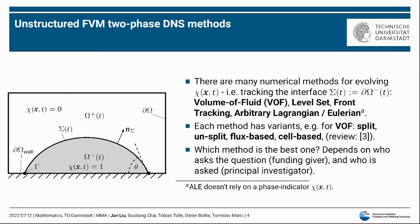Let's start with the modeling background. Two-phase flows are ubiquitous in industrial and scientific applications and are the focus of many computational studies. The phase indicator chi is used to distinguish the two phases and the interface sigma separates them. There are many different numerical methods for tracking the interface, like moving mesh fluid, level-set, and VOF tracking. Each method has further multiple variants, such as split VOF, unsplit VOF flux, or cell-based VOF. There is no recognized best choice.